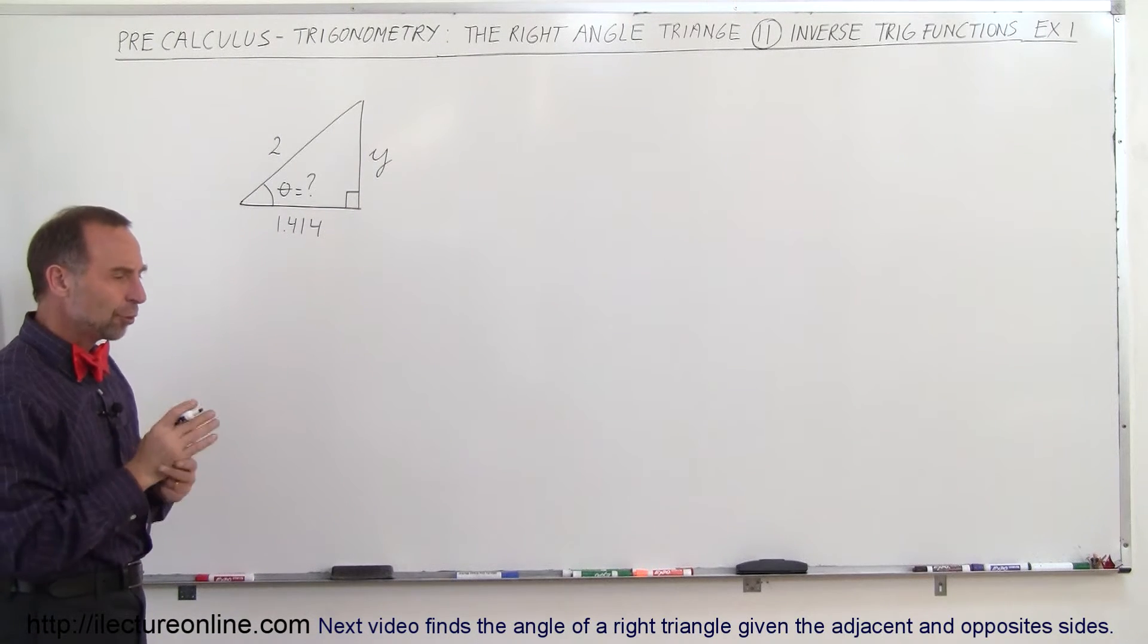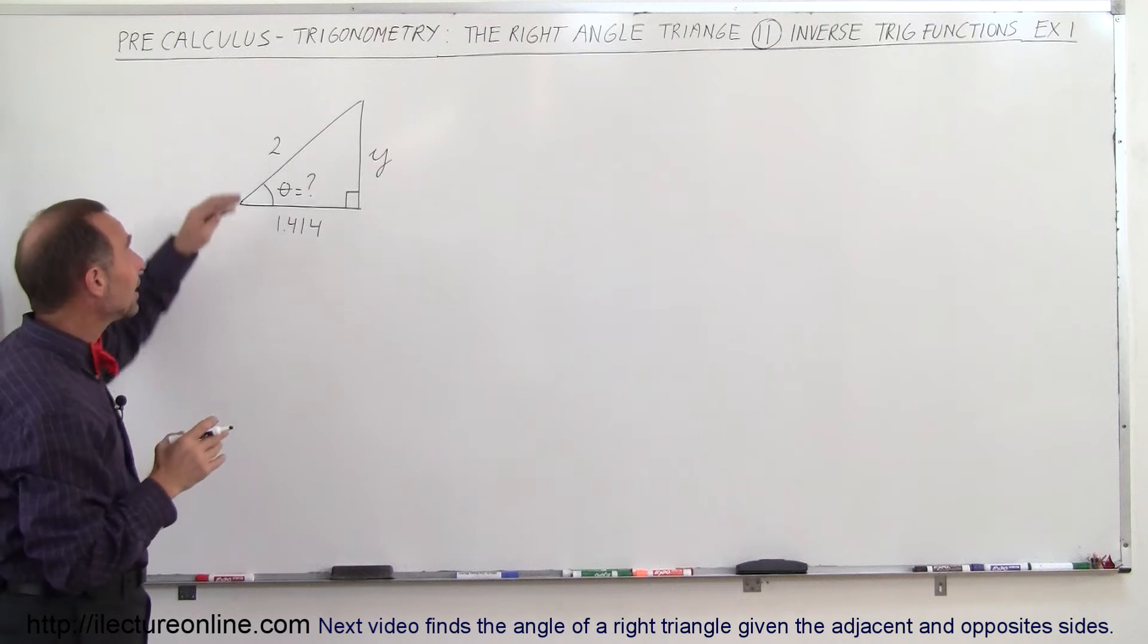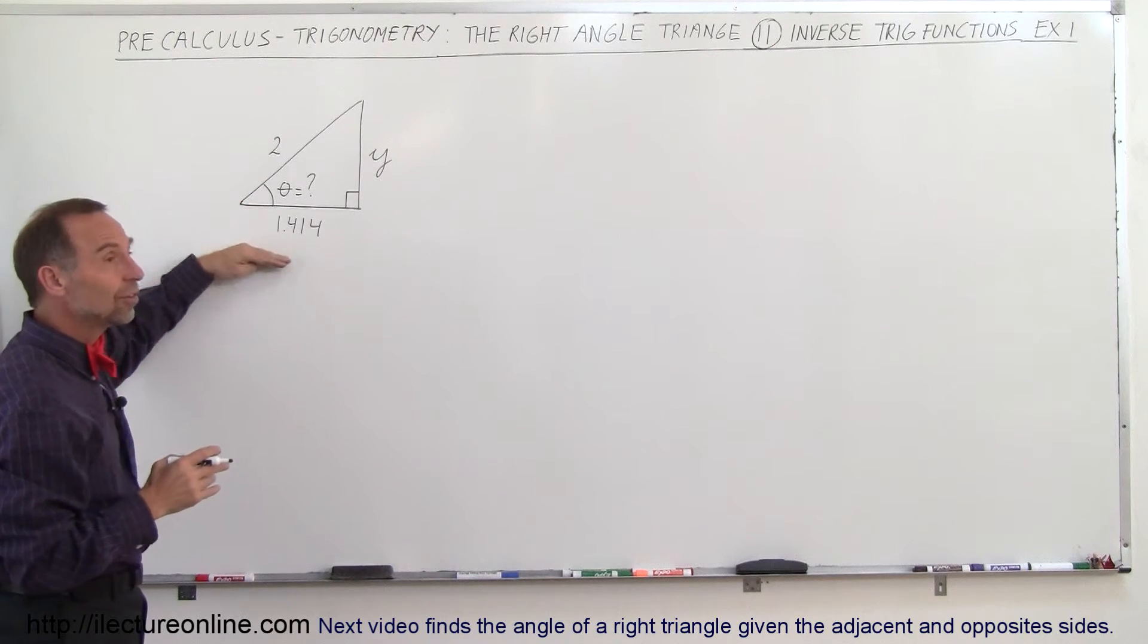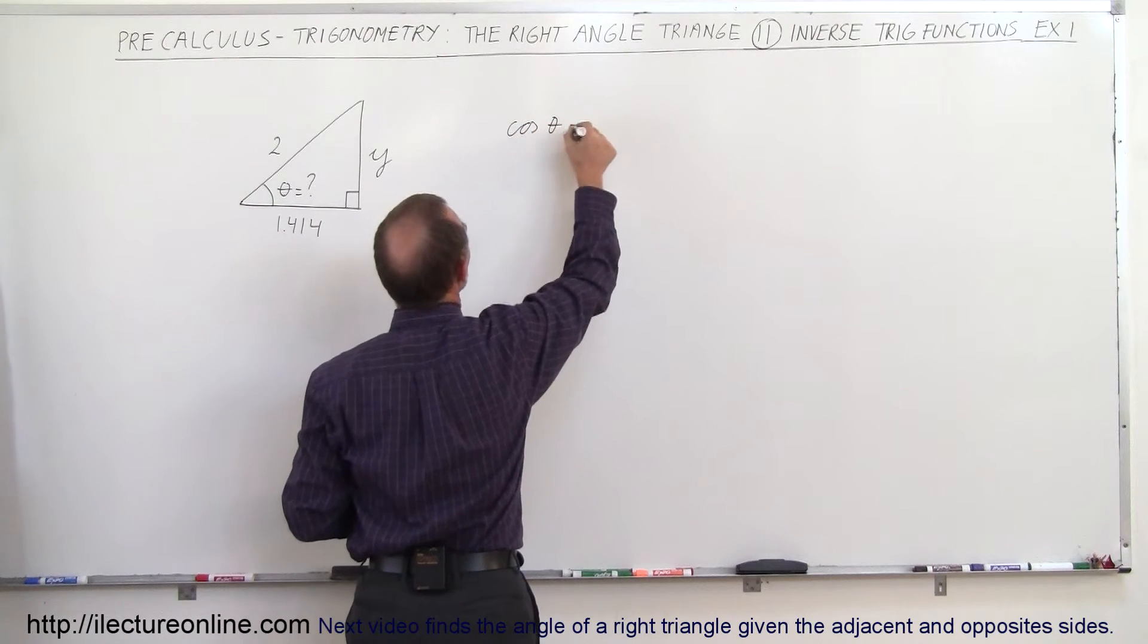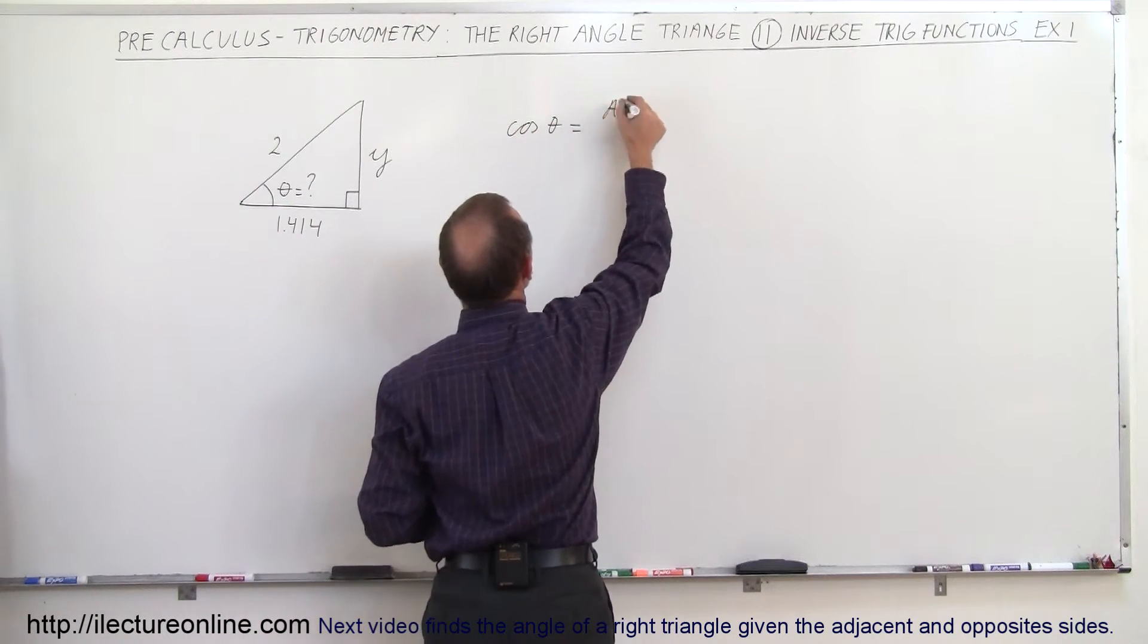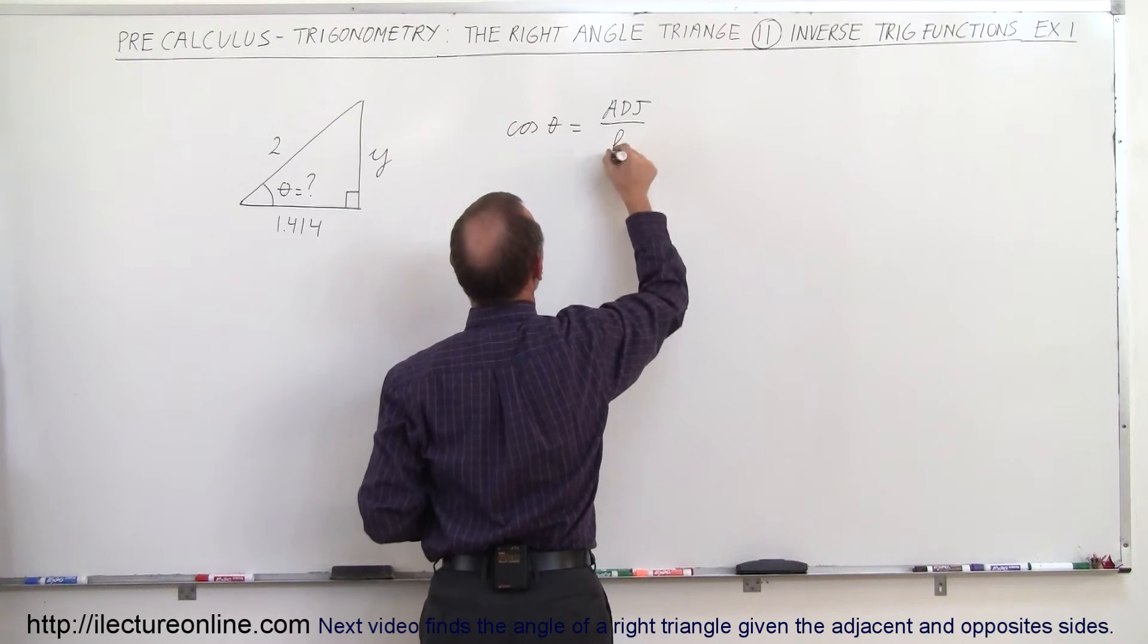So I'm looking for a trigonometric function that relates the hypotenuse to the adjacent side. That's the cosine of the angle. So the cosine of theta is equal to the ratio of the adjacent side divided by the hypotenuse.